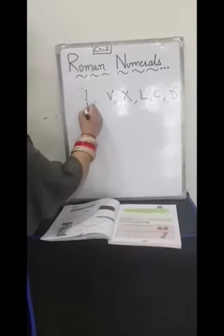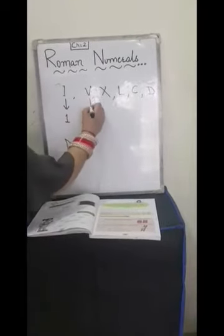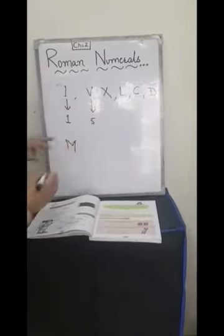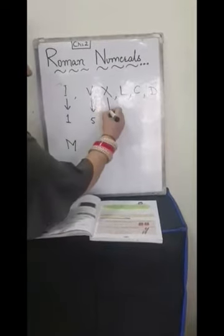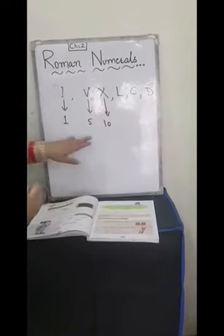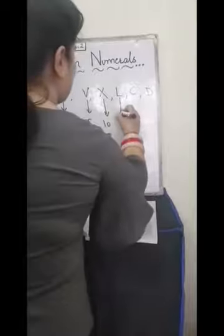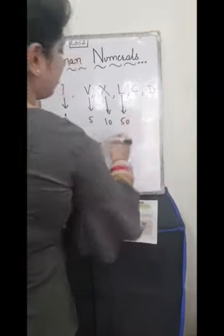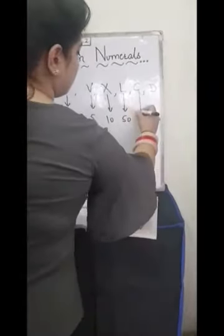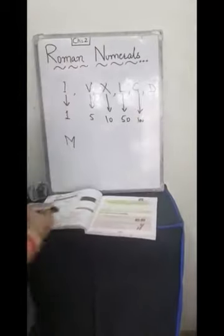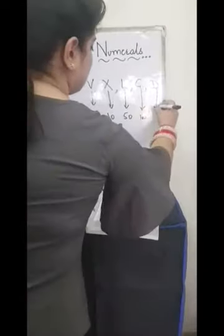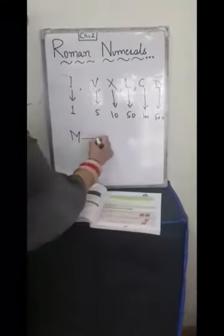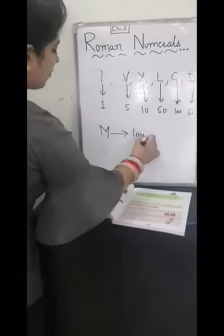I stands for 1, V stands for 5, X stands for 10, L stands for 50, C stands for 100, D stands for 500 and M stands for 1000.